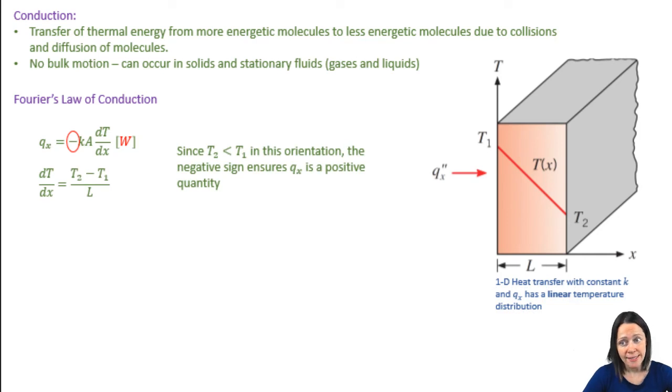The last thing we need to note is the negative sign. Since T2 is less than T1, in this case, the negative sign of dT/dx, T2 minus T1 over L, in this case, ensures that Q will be a positive quantity.